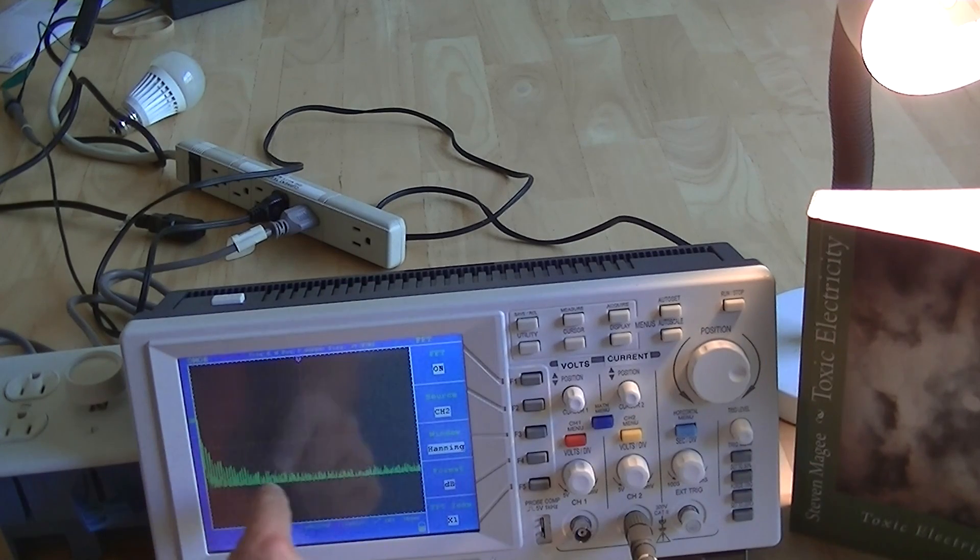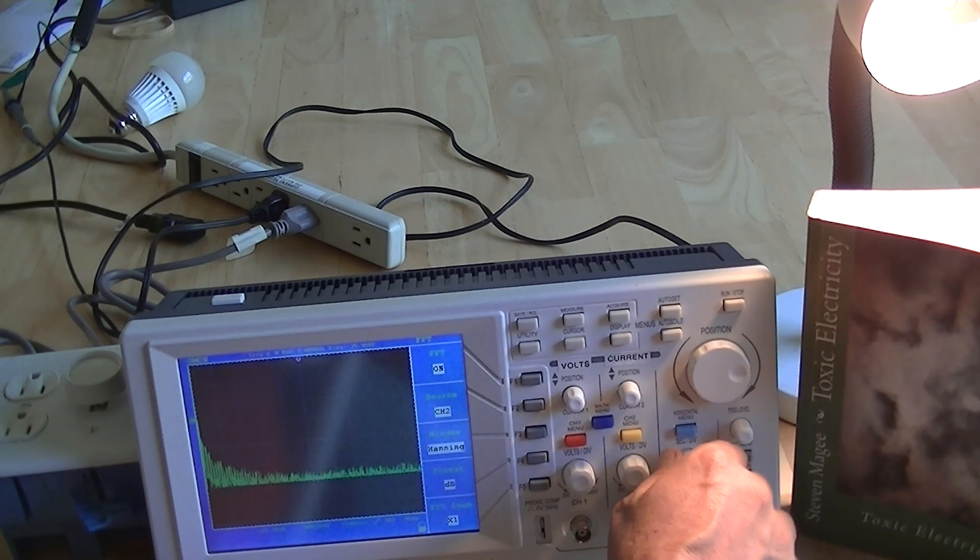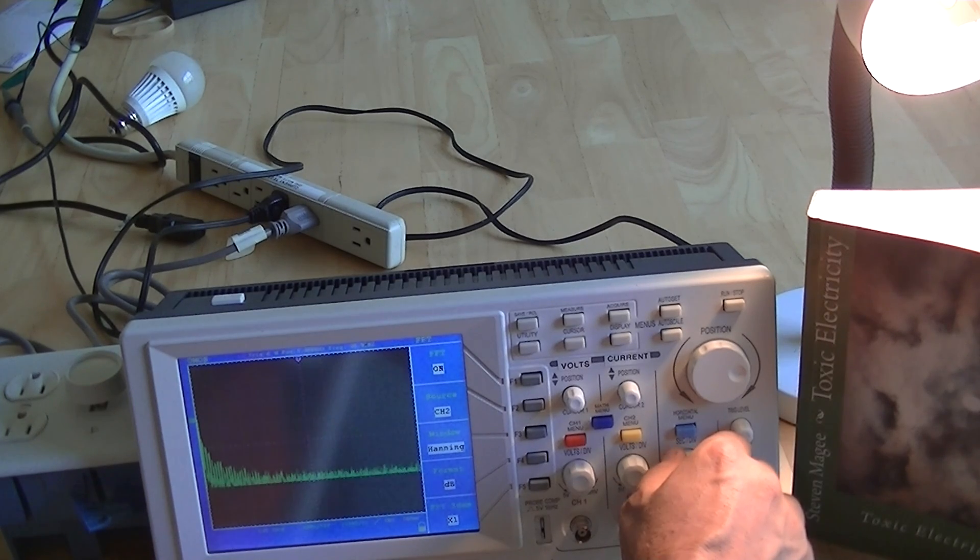So you can see that they're all bunched up into this area and this display right now is displaying one kilohertz per division. So they're all centered below about 5 kilohertz.